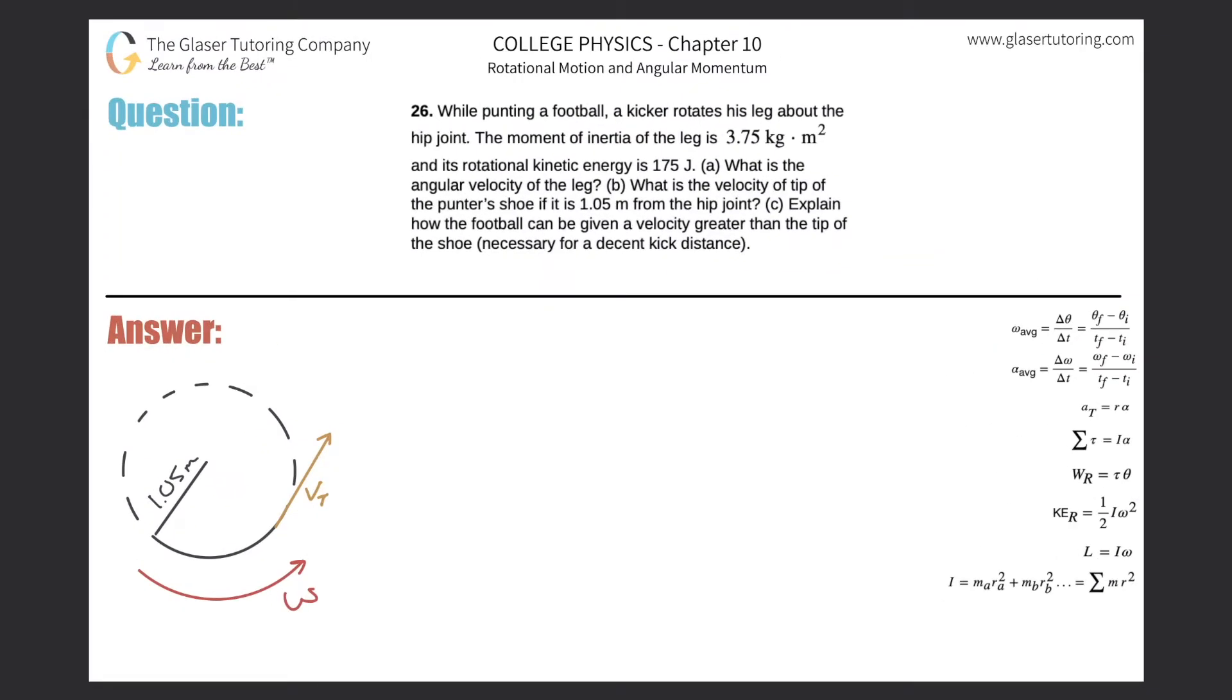Number 26: While punting a football, a kicker rotates his leg about the hip joint. The moment of inertia of the leg is 3.75 kilogram meter squared and its rotational kinetic energy is 175 joules. What is the angular velocity of the leg?